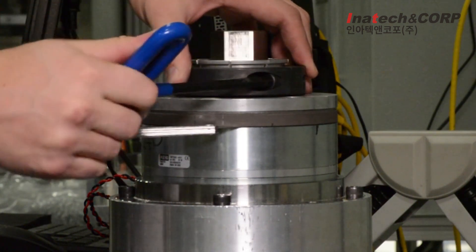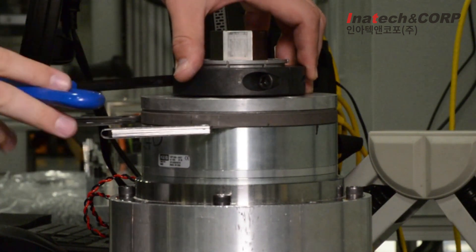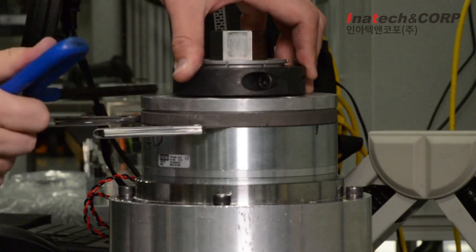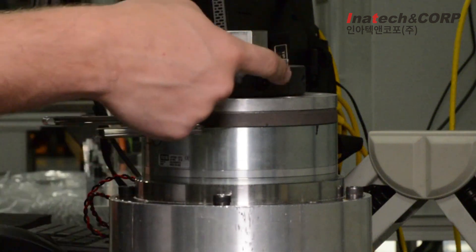Instead of a clamping collar, often times set screws in the hub or a shoulder and snap ring are used to set a consistent air gap every time.